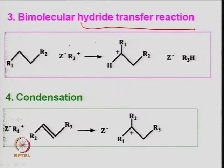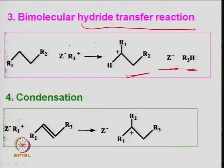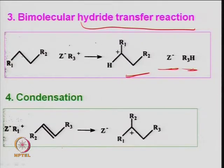A bimolecular hydride transfer reaction: a tertiary type carbon (R₃), zeolite material, and R₁-R₂ straight-chain hydrocarbon — two molecules associated to this framework — and you have zeolite material and R₃H. R is any alkyl group of any carbon number. A condensation reaction forms aromatic hydrocarbons or larger molecular rate of hydrocarbon. All these steps are possible in the presence of an acid catalyst — a primary carbonium ion forms and then converts to secondary, then tertiary.